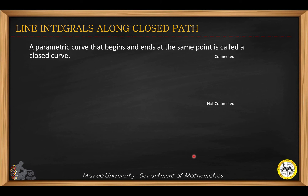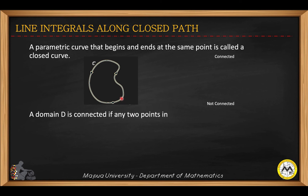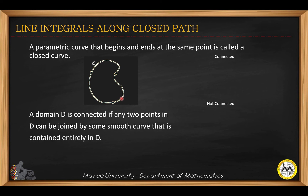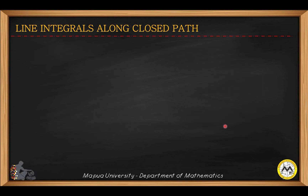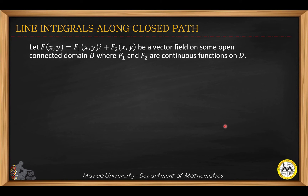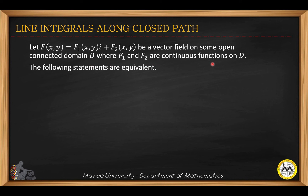For line integrals along a closed path, a parametric curve that begins and ends at the same point is called a closed curve. The domain is connected if any two points in d can be joined by some smooth curve contained entirely within d. A connected domain or region is shown as an example, contrasted with a non-connected domain where f and f1 are continuous functions on d.